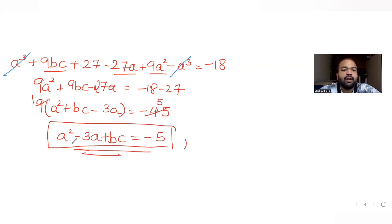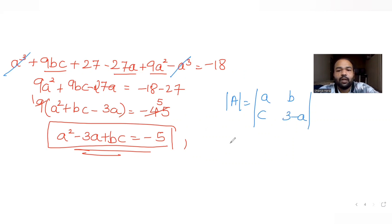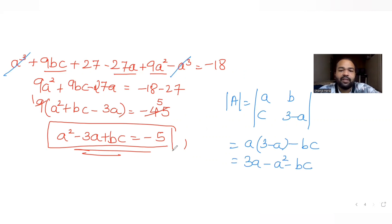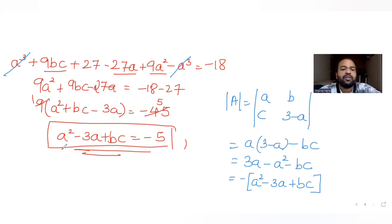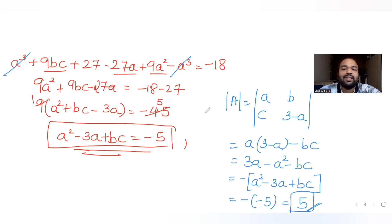Now let's find the determinant of A. The elements of A are a, b, c, and 3-a, so det(A) = a(3-a) - bc = 3a - a² - bc. If I take out a negative sign, this becomes minus(a² - 3a + bc). Since a² - 3a + bc = -5, det(A) = -(-5) = 5.